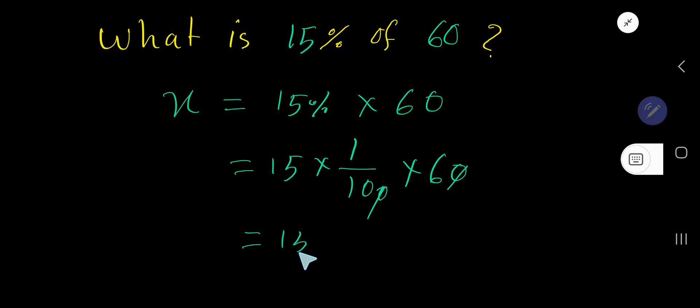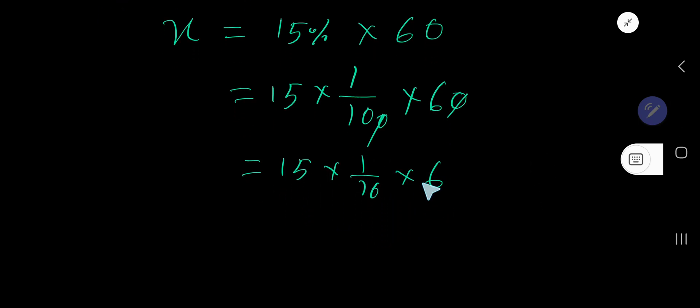So we are getting 15 times 1 over 10 times 6. Look, this is divisible by 2, this is divisible by 2. So if you divide this 10 by 2, you will get 5, and if you divide this 6 by 2, you will get 3.